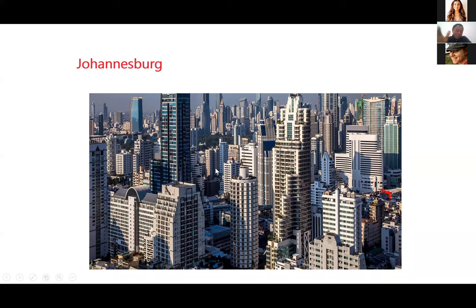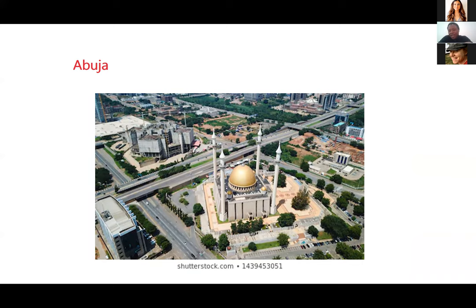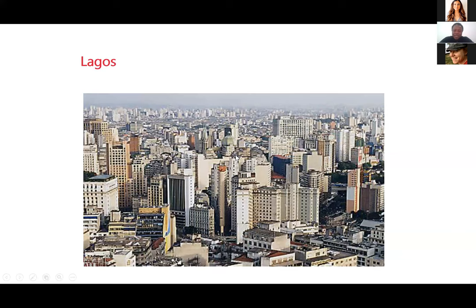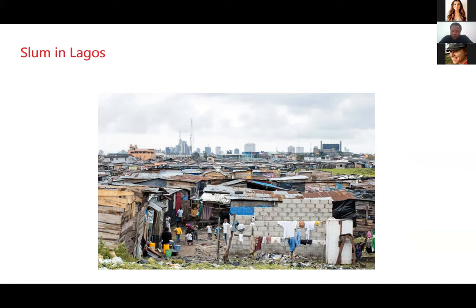This is Johannesburg — it's really just like Vancouver. This is a city right in South Africa. This is Abuja, Nigeria. Lagos was once the capital but got so congested they decided to create a new capital in the middle of the country. You can see Abuja is well-planned with graded streets. Now this is Lagos — you can see the density of millions of people. And this is a slum in Lagos.